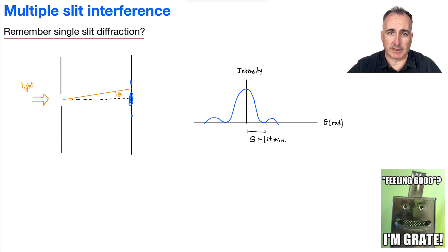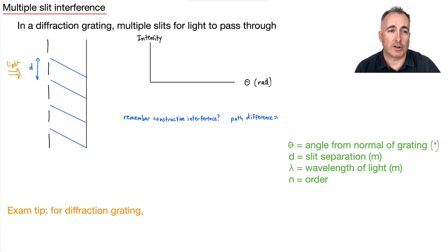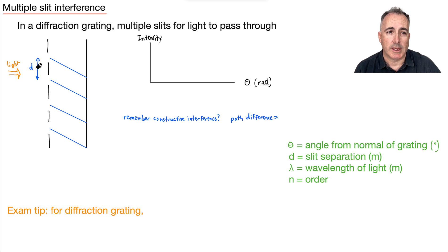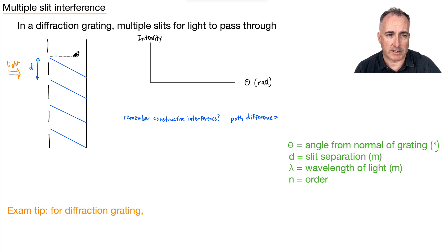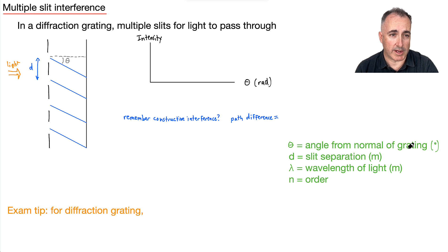What about multiple slit diffraction? That's often called a diffraction grating, and that's where we have multiple slits for light to pass through. Light's coming from the left, going to the right, passing through these different openings. We're going to call the slit separation D. And this angle theta here will be the angle from the normal to the grating.